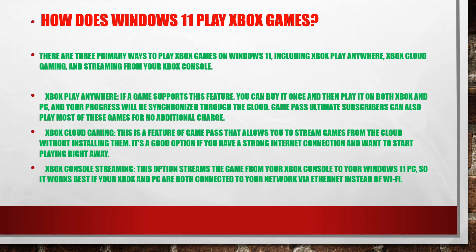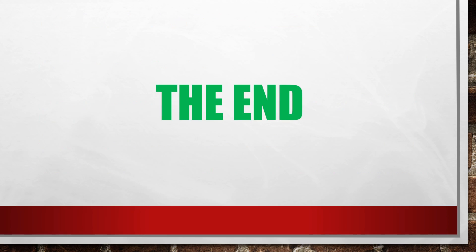There are three primary ways to play Xbox games on Windows 11: Xbox Play Anywhere, Xbox Cloud Gaming, and streaming from your Xbox console. Xbox Play Anywhere: if a game supports this feature, you can buy it once and play it on both Xbox and PC, and your progress will be synchronized through the cloud. Game Pass Ultimate subscribers can also play most of these games at no additional charge. Xbox Cloud Gaming: this feature allows you to stream games from the cloud without downloading them — it's a good option if you have a strong internet connection. Xbox Console Streaming: this streams the game from your Xbox console to your Windows 11 PC, and works best if both are connected to your network via Ethernet instead of Wi-Fi.